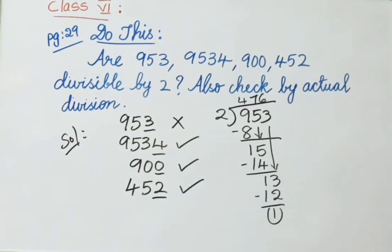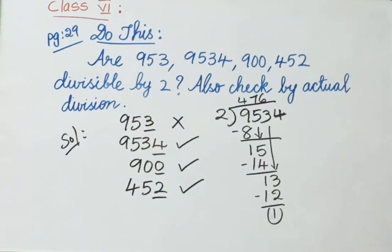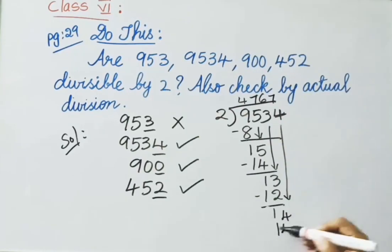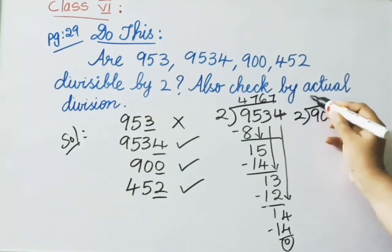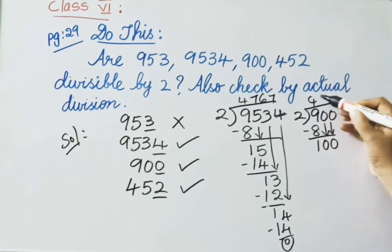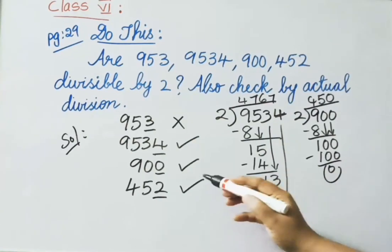Checking 9534 divided by 2: working through the division, we get a remainder of 0. So 9534 is divisible by 2. Checking 900 divided by 2: we get a remainder of 0, so 900 is divisible by 2. It is proved by actual division as well.